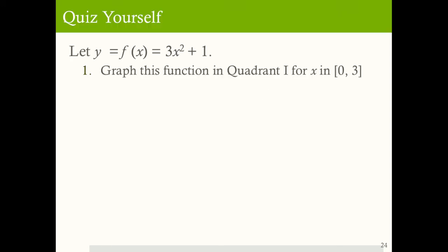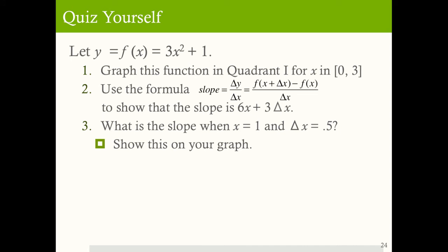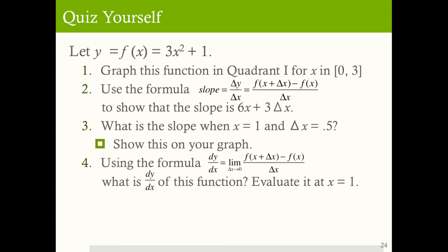Quiz yourself. Let y equal f(x) equal 3x squared plus 1. Graph this function in quadrant 1 for x between 0 and 3. Then use the slope formula to show that the slope equals 6x plus 3 times Δx. Then approximate the slope at x equals 1 by calculating the slope when x equals 1 and Δx equals 0.5, and show this on your graph. Finally, use the derivative formula to find the derivative and get a more precise value for the derivative at x equals 1. Pause the video and try this on your own.